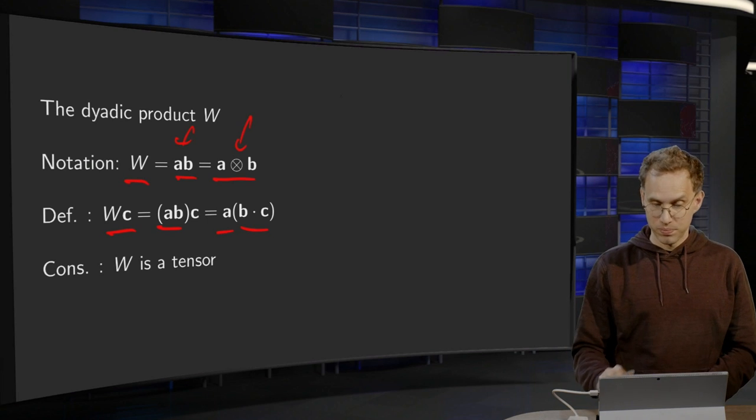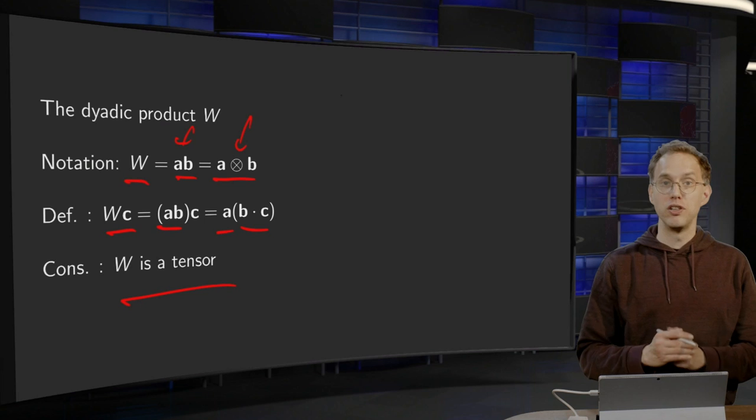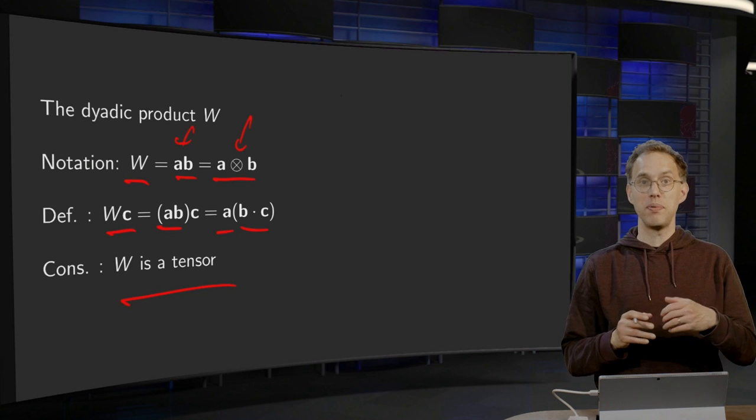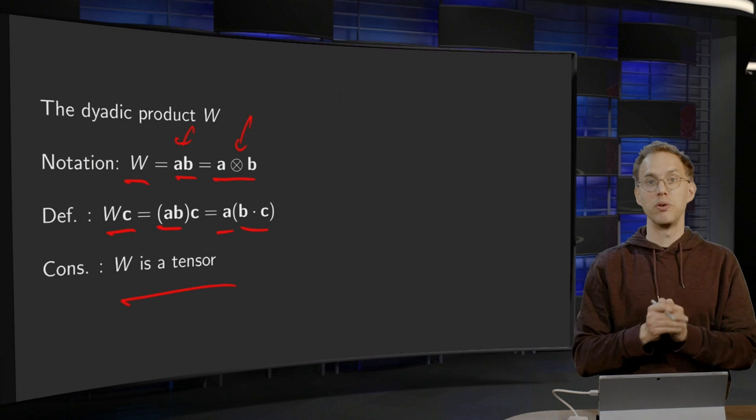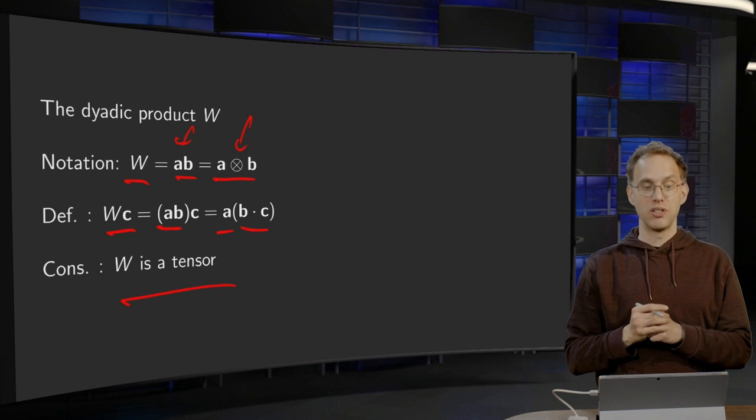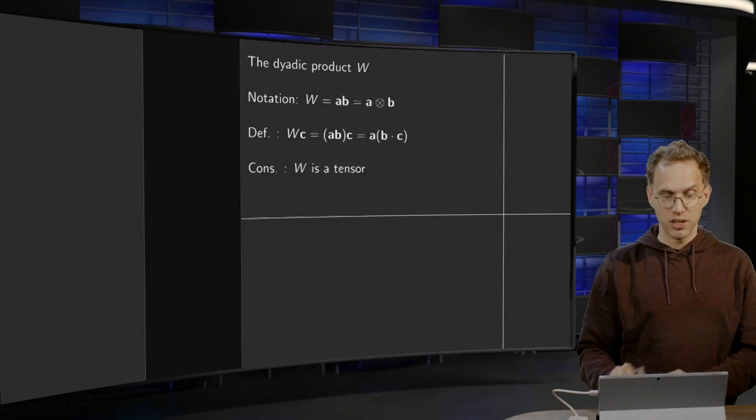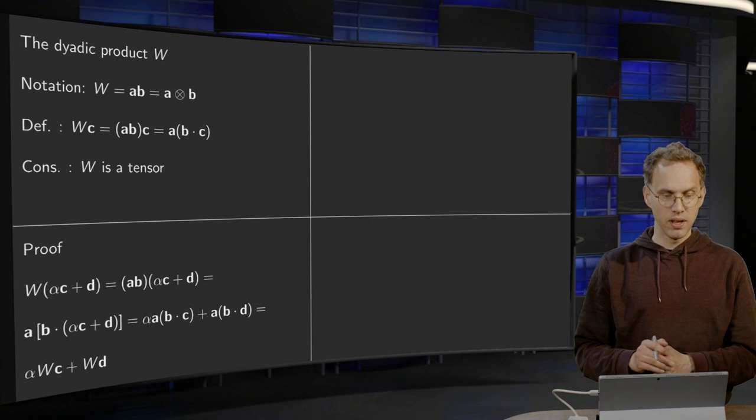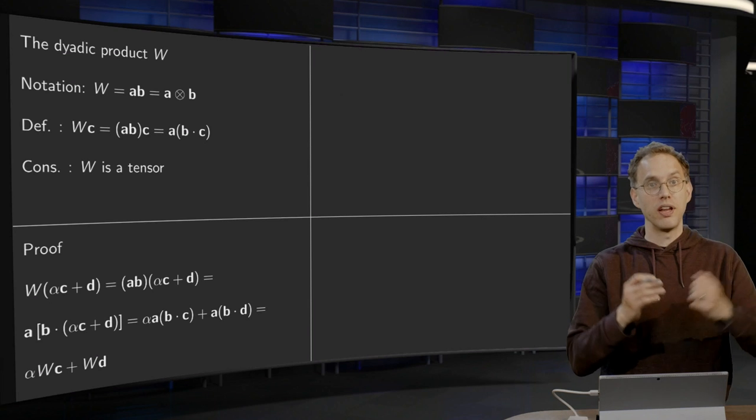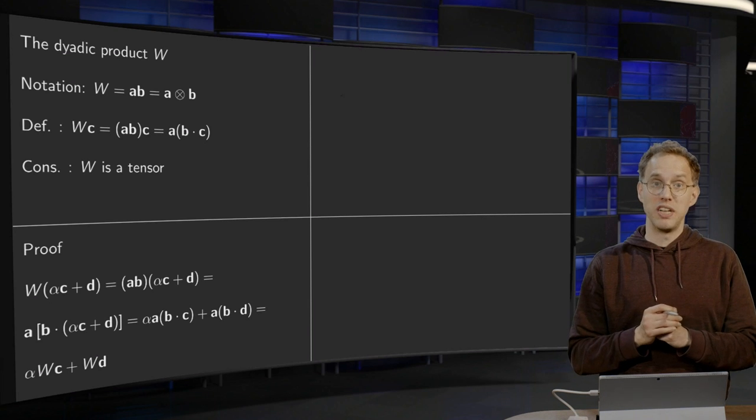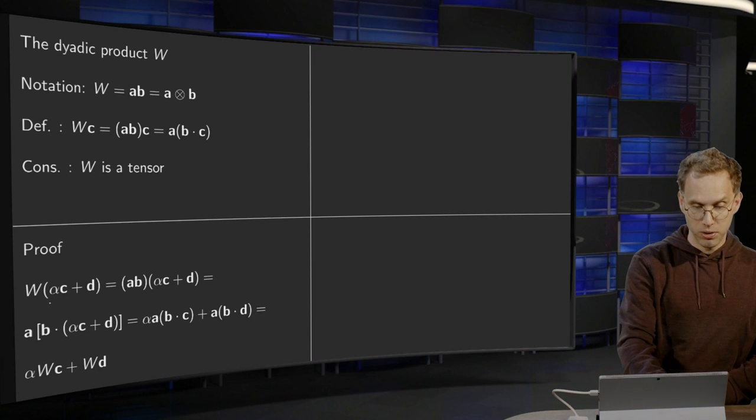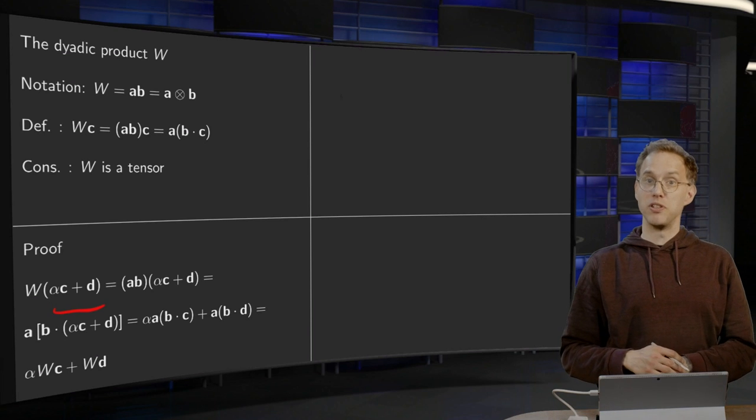So, first of all we are going to show that W is a tensor, because what is happening, you feed a vector in into your W and you get the vector out. So, it looks like it is operating as a matrix. Let us show that. Well, in order to show that, we have to show that W is linear. So, we look at W working on alpha times C plus D.